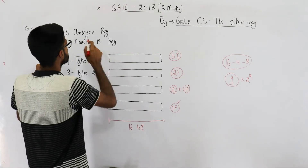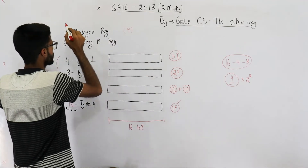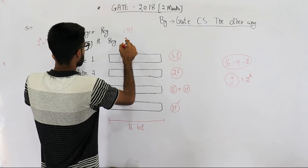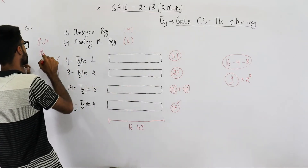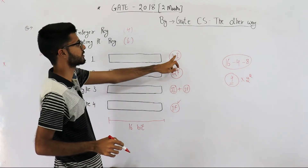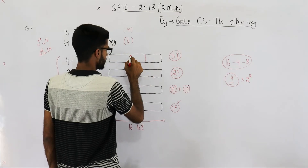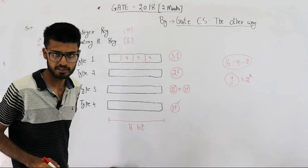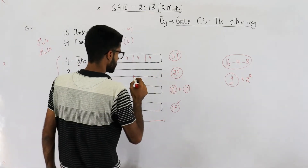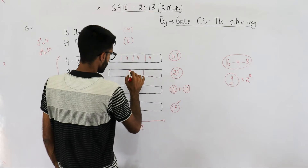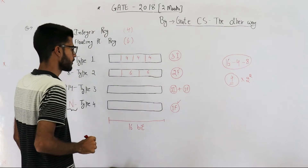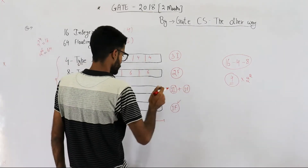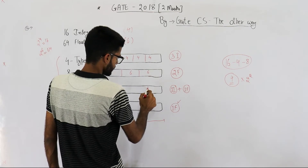Let's see how many bits are there for the opcode in each type. An integer register requires 4 bits because 16 equals 2 to the power 4. A floating point register requires 6 bits because 64 equals 2 to the power 6. Three integer registers in a Type 1 instruction means 4+4+4 bits for specifying them. Two floating point registers in Type 2 means 6+6 bits. Type 3 has 14 opcodes with one integer plus one floating point operand.